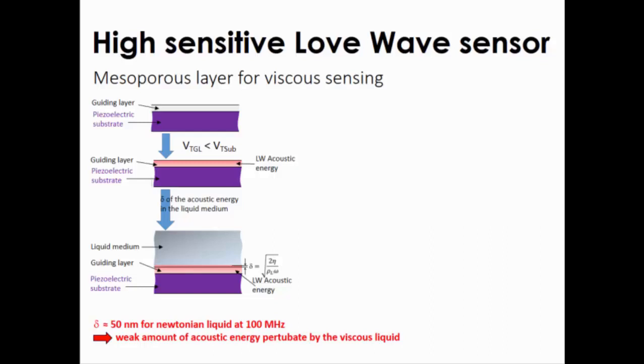As I said, in certain conditions here, if the shear wave velocity of the guiding layer is lower than in the substrate, we can localize here the acoustic energy inside the guiding layer. By adding a liquid sample on the free surface, we will have a penetration of a part of the acoustic energy inside the liquid with a penetration depth we can estimate at 50 nanometers for a neutron liquid near 100 MHz.